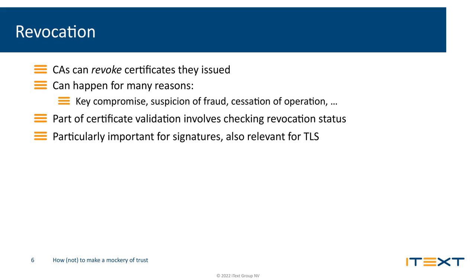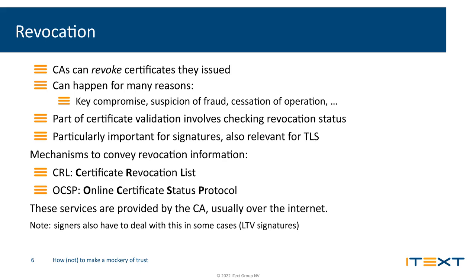The two main mechanisms by which a certificate authority communicates the status of its issued certificates are CRLs and OCSP. CRL stands for Certificate Revocation List — it's basically just a list of all the certificates that are currently revoked. For large commercial CAs, these CRLs can get very large and unwieldy, so the CA can also offer OCSP access. The way this works is that the CA exposes an OCSP responder service to the internet, and you can send a request to ask whether a specific certificate is still valid. This is all complexity that has to be dealt with by pretty much all applications that rely on signature validation for integrity.